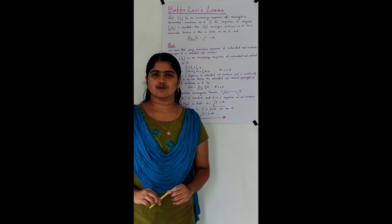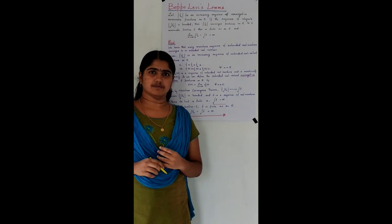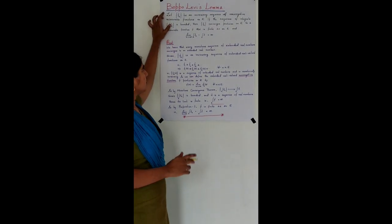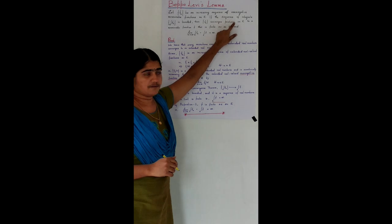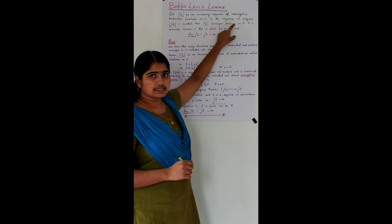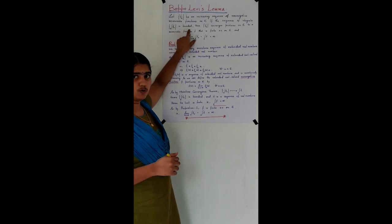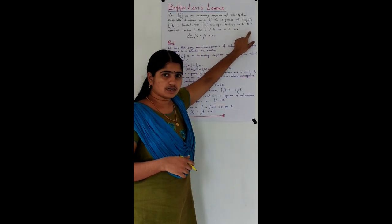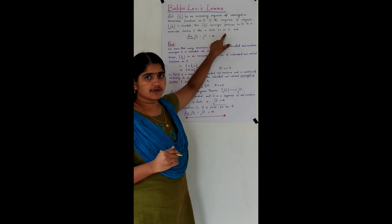Hello friends, let us look into a lemma — Beppo Levi's lemma — in continuation with the last session. Beppo Levi's lemma says that: let the sequence {Fₙ} be an increasing sequence of non-negative measurable functions on E. If the sequence of integrals — the integral over E of Fₙ — is bounded, then the sequence {Fₙ} converges pointwise on E to a measurable function F that is finite almost everywhere on E.